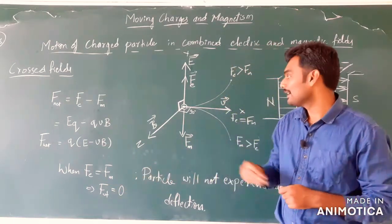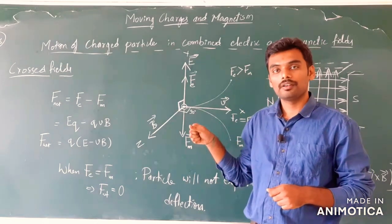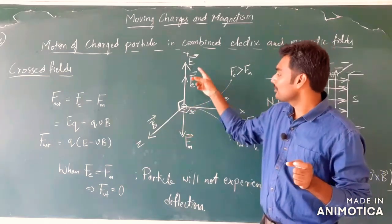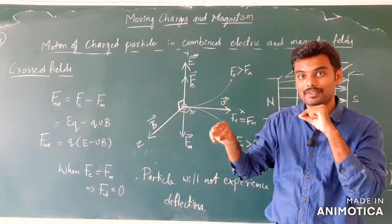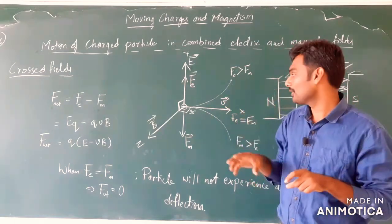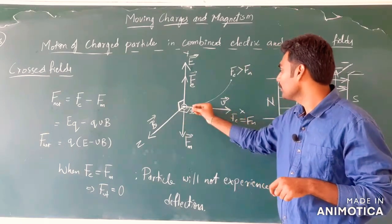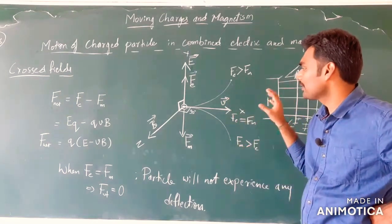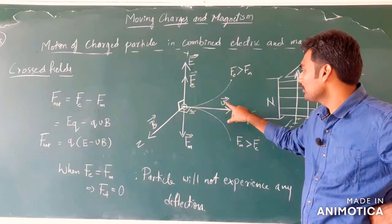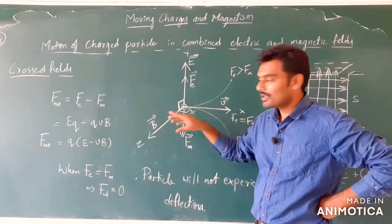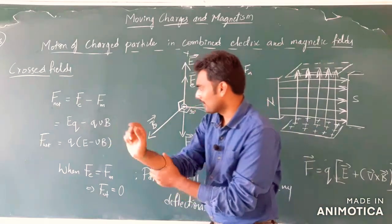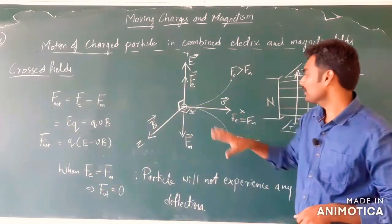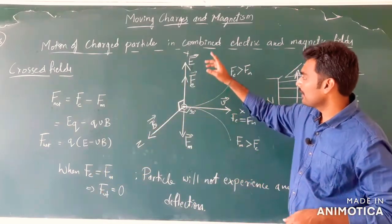If we want to make a particle move in the crossed fields without any deflection, we need to make the electric force equal to the magnetic force. We will derive an expression for the values of E and B — specifically the relation between the condition we need to set prior, to get a particle of certain velocity without deflection. The factors which we cannot change are: electric field, magnetic field, and charge — they are initially set. But we can change the velocity.